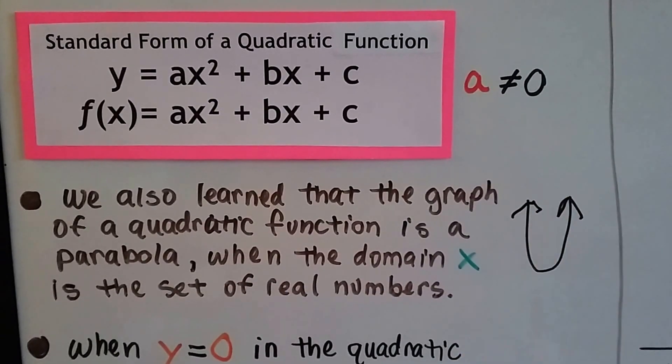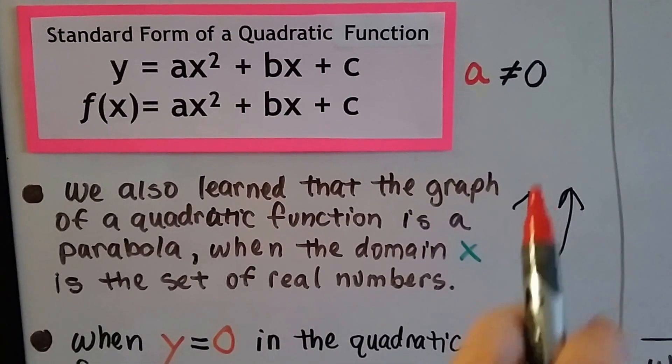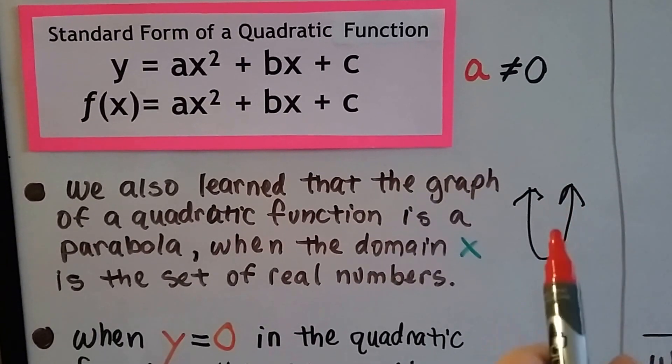This is a u-shaped guy. When the domain x is a set of real numbers, that's facing upwards with the open side up. So we know that's a positive, right?